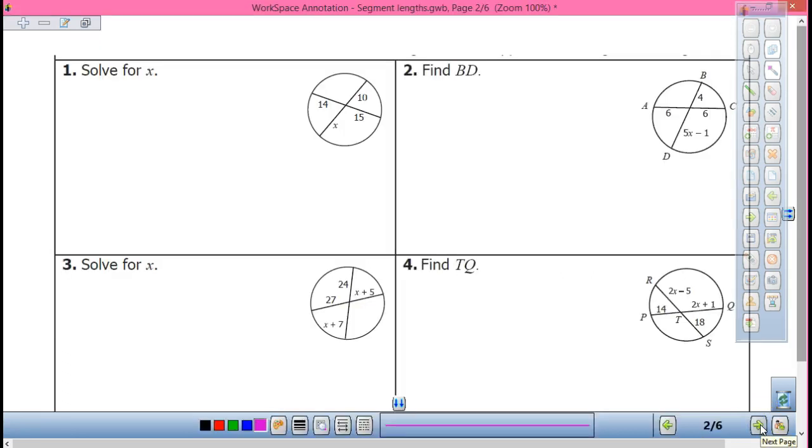All right. So intersects on the inside, right? Intersects on the inside, so what do I have here? 9 times X equals, we're going to multiply these together, 14 times 15. 9X equals 210. So X is... 21. Not so bad, right?